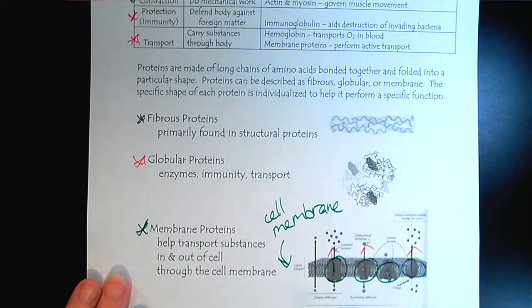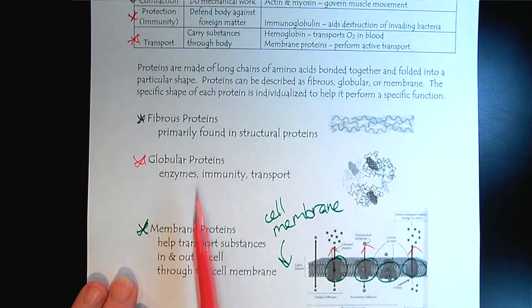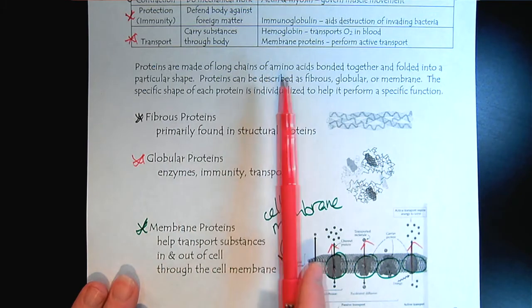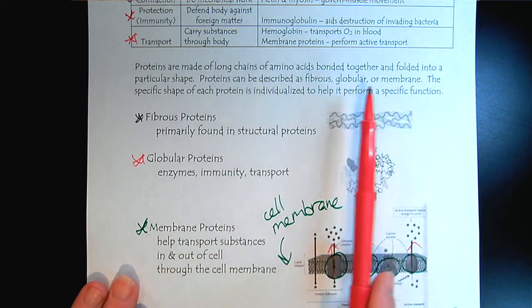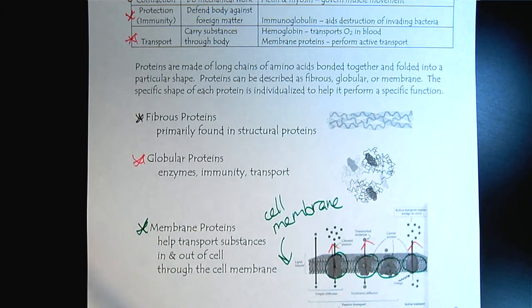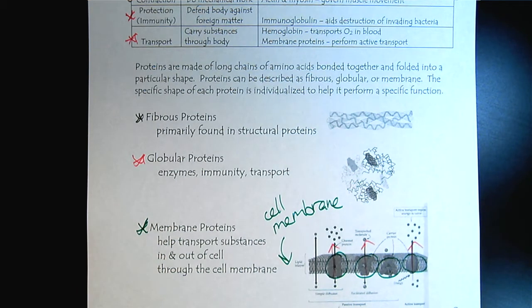The other important thing to note is what they all have in common. While they have different structures and functions, all of these proteins are made from long chains of amino acids bonded together and then folded into a variety of shapes. As we move on through the tutorial series, we'll look more closely and in detail at proteins and amino acids.